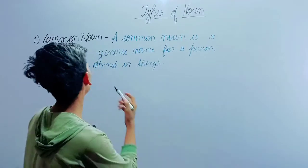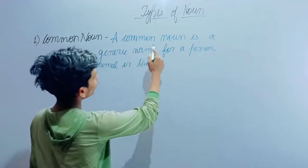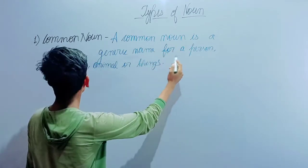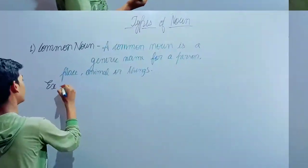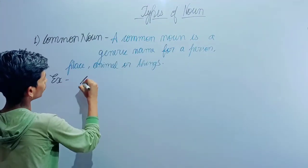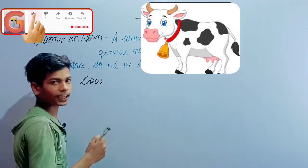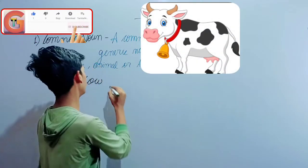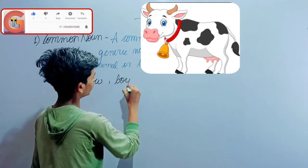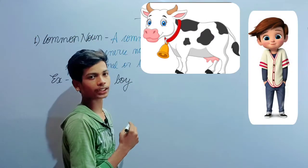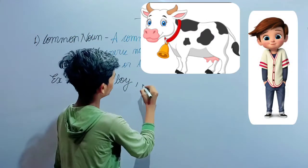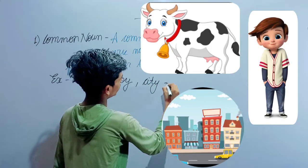Let's discuss common noun and its definition. A common noun is a generic name for a person, place, animal, or thing. For example: cow, boy, city, etc. If there is a boy you can see but he doesn't have a name, that's a common noun.